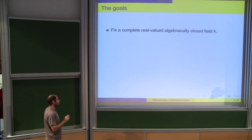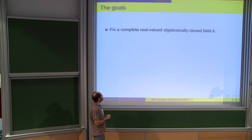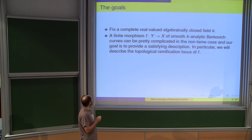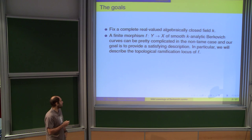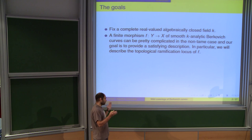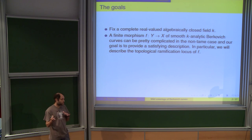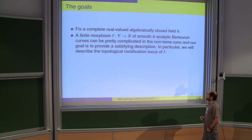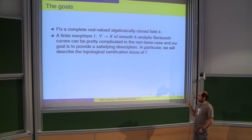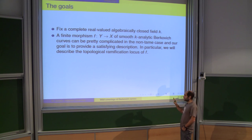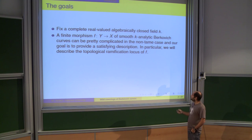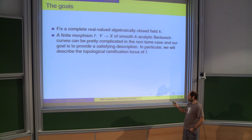We'll always work over purely geometric situations, so we fix an algebraically closed, complete real-valued field k, and we'll study Berkovich curves only over such a field. A finite morphism of smooth k-analytic Berkovich curves can be—in principle—thought of using equivalent languages: formal models or rigid curves. In the end, we all study more or less the same object from slightly different angles. These morphisms can be pretty complicated, with what I call a huge topological ramification locus. All these notions will be introduced later.